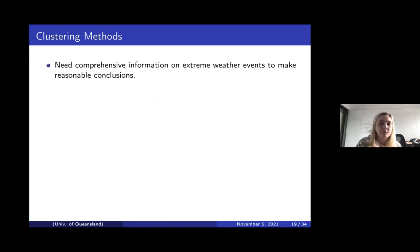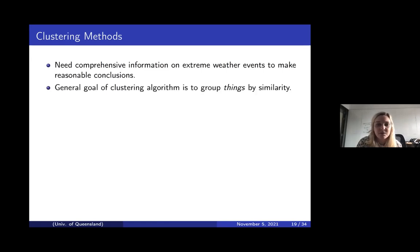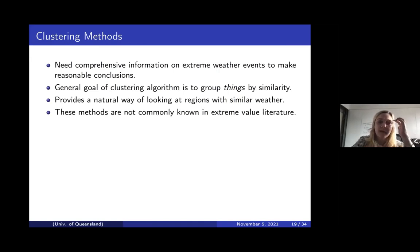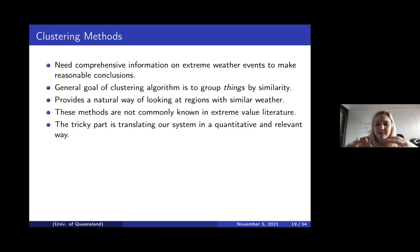We really need comprehensive information on extreme weather events to make reasonable conclusions about our data. A natural way of doing this is clustering, because the general goal of clustering is to group things by similarity. This allows us to look at regions with similar weather. These methods are not commonly known in extreme value literature, and the tricky part is translating a system of many stations with time series in a quantitative and relevant way to a clustering algorithm.